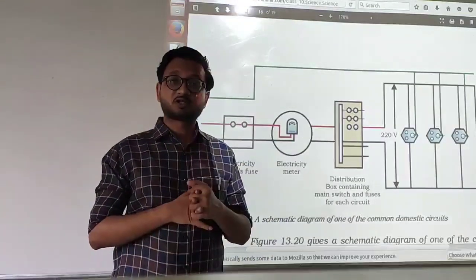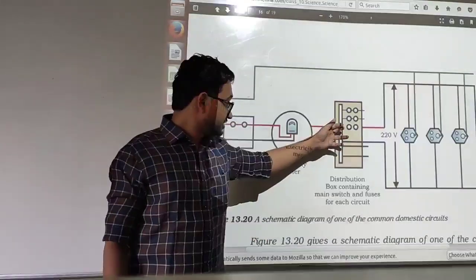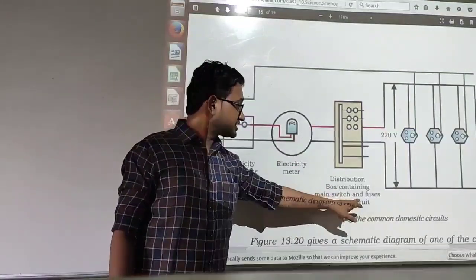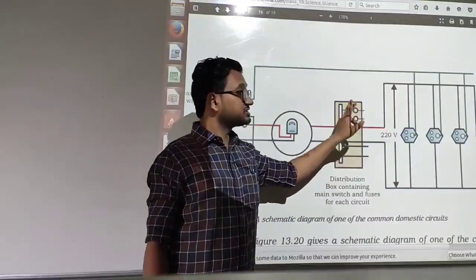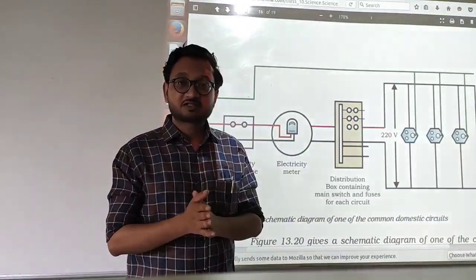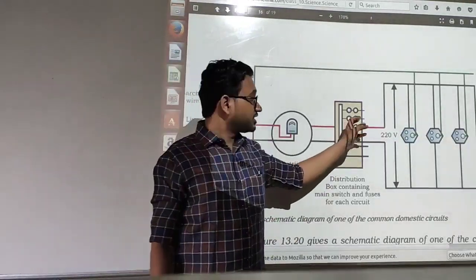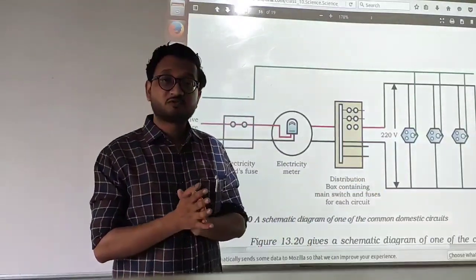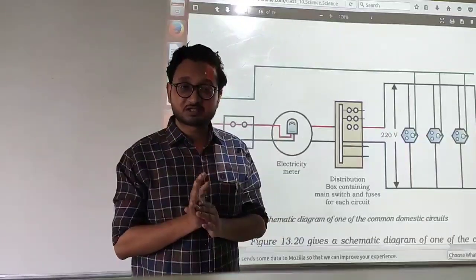Now, remember we talked about fuse in the previous chapter. Same thing is happening over here. This is the box that is the main switch and fuses for each circuit. For each circuit this particular connection there is a fuse over here. What happens is if there is short circuiting and there is overloading then particular fuse will melt because fuse works on the principle of heating effect of electric current that we studied in the previous chapter.